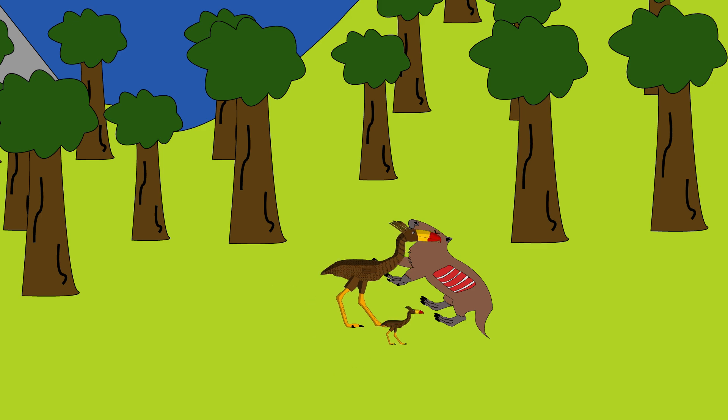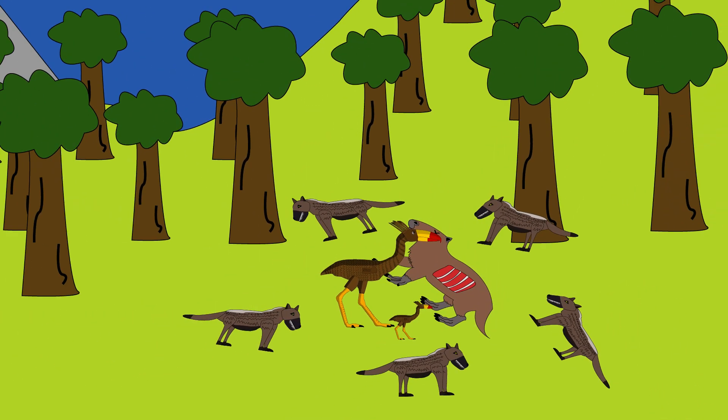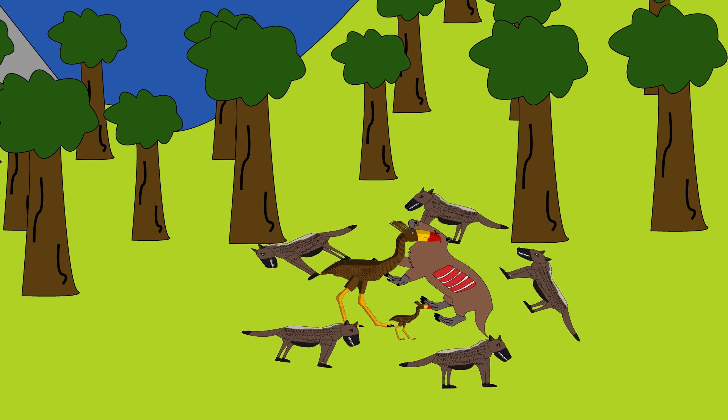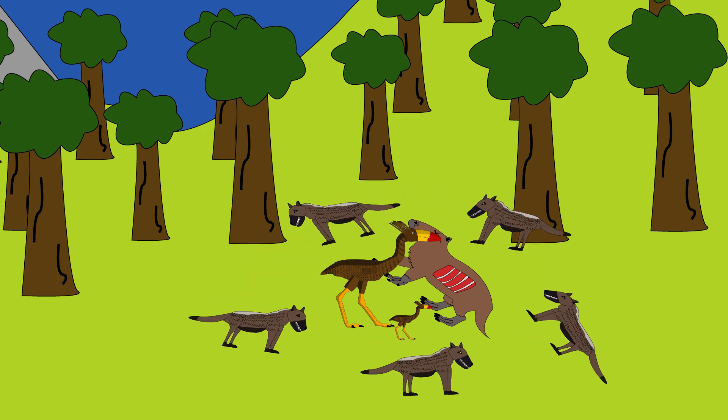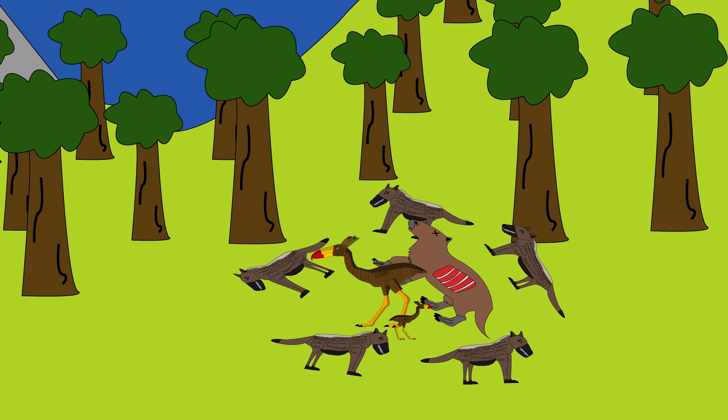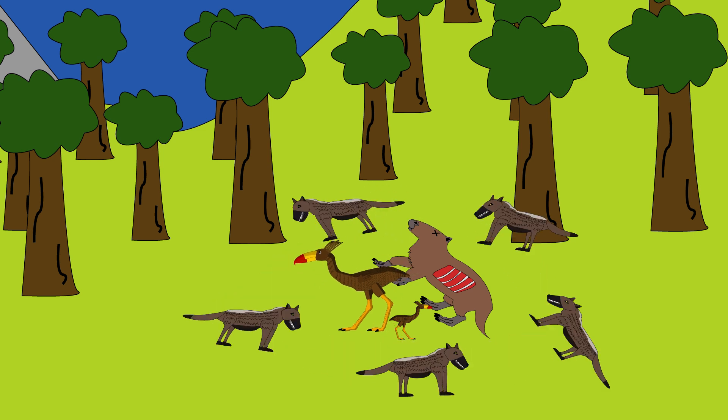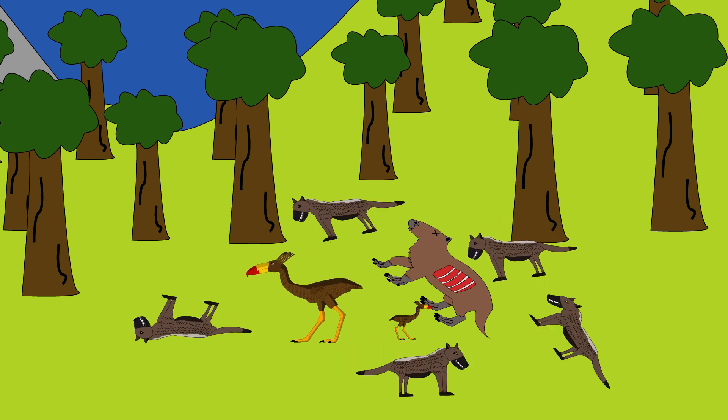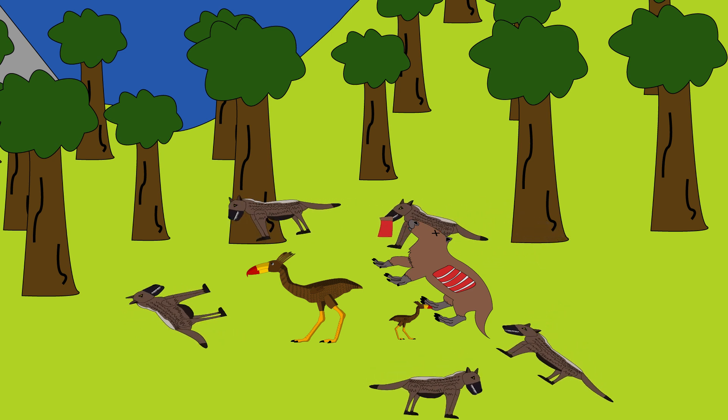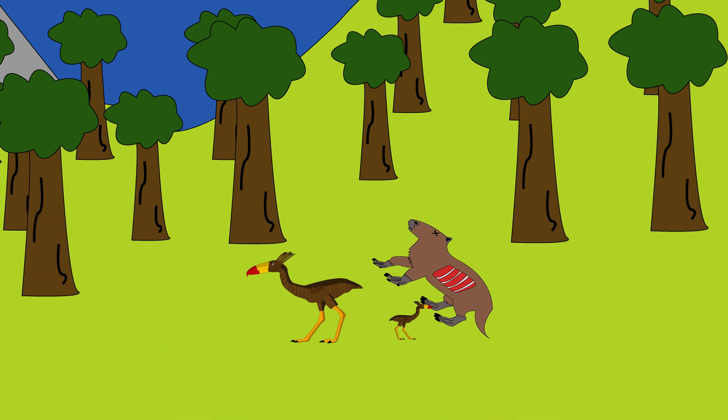But even the best predators have rivals. One morning, you wake to the stench of blood and the sound of snarling. A pack of prehistoric dogs circles the remains of a kill. Your mother lowers her head, feathers bristling. She charges, scattering the pack, but not before one snatches a chunk of meat and vanishes into the brush. You learn: in this world, even victory means sharing with thieves.